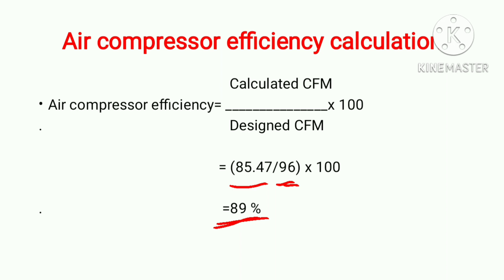So our air compressor efficiency is 89%. That is how we calculate the volumetric efficiency of an air compressor. I hope you liked the video. If you did, please press the like button, subscribe to the channel, and share the videos. Thanks for watching, bye bye.